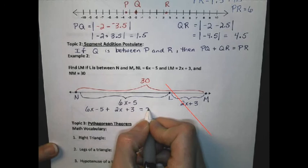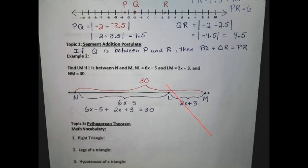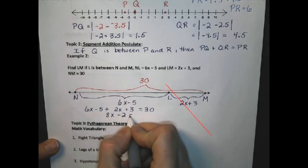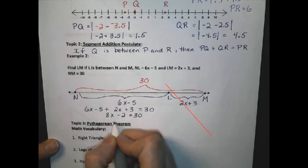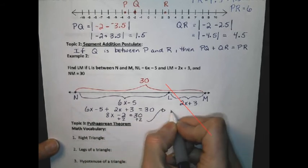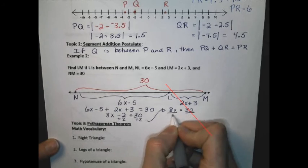At this point, I simply combine like terms and simplify. So I will get 8x minus 2 equals 30. Of course, I would add 2 to both sides and get 8x equals 32. Divide by 8. And I find out that x equals 4.